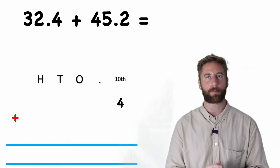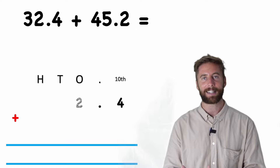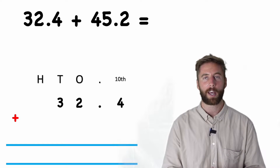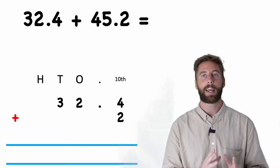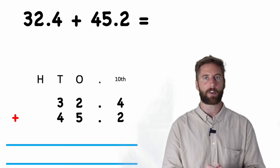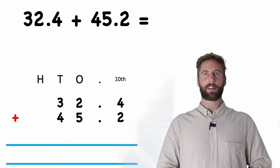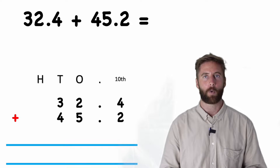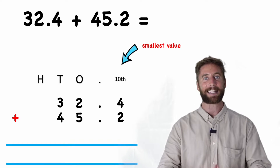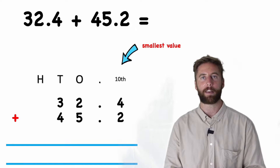Let's put our numbers in the correct places. For 32.4, I have four tenths. I'm going to put my decimal point in the correct place. I have two ones and I have three tens. In my 45.2, I have two tenths. I'm going to put my decimal point in the correct place — five ones and four tens. Now I'm ready to begin. We start at our smallest value, and in this case our tenths column is our smallest value.